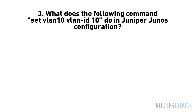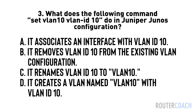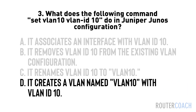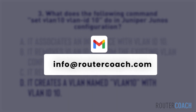Question three: What does the command 'set VLAN 10 VLAN ID 10' do in Juniper Junos configuration? A — it associates an interface with VLAN ID 10. B — it removes VLAN ID 10 from the existing VLAN configuration. C — it renames VLAN ID 10 to VLAN 10. D — it creates a VLAN named VLAN 10 with VLAN ID 10. The answer is D. The command creates a VLAN named VLAN 10 and assigns it VLAN ID 10; the set command is used to configure parameters, in this case specifying the creation of a VLAN with the specified VLAN ID. To get the complete question banks for all the JNCIS-ENT videos, drop us an email at info@rittercoach.com.